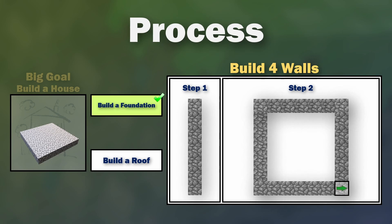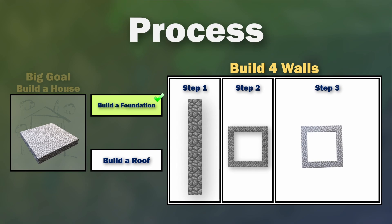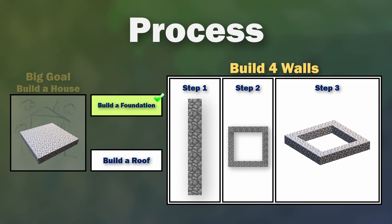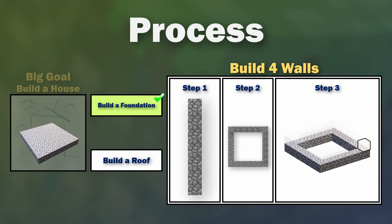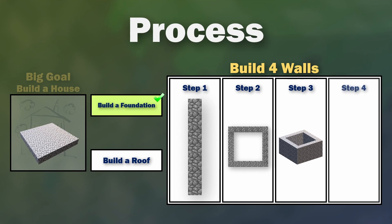Unfortunately we're still only part way there, because at the moment we've only got one single row — one single block high of walls. So we're going to move our builder up by one and repeat all of step two again as many times as we need to create walls of varying heights. Then we're going to look at how to take that wall and change it so that it's a different type of block.